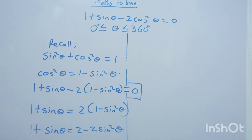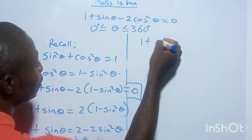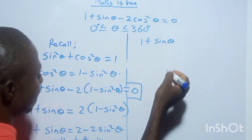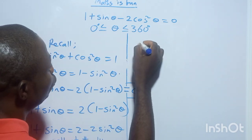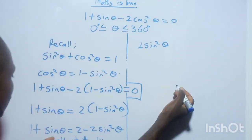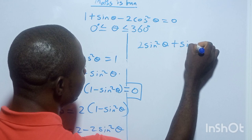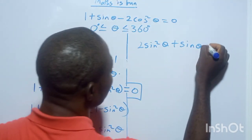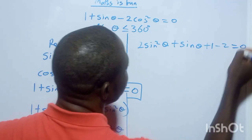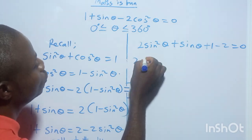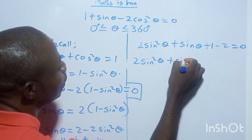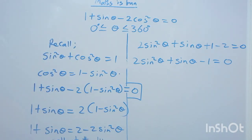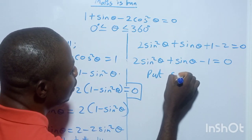Now let's collect the like terms. Collecting the like terms, we get: 2sin²θ + sinθ + 1 − 2 = 0, which simplifies to 2sin²θ + sinθ − 1 = 0.